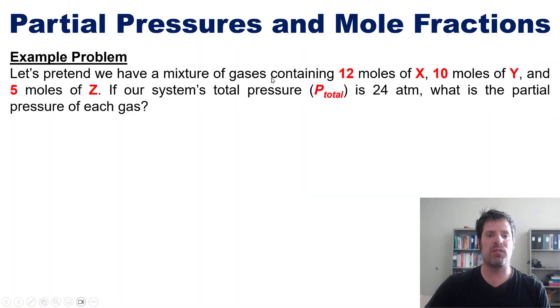Let's pretend that we have a mixture of gases containing 12 moles of X, 10 moles of Y, and 5 moles of Z. Let's also pretend that our system's total pressure is 24 atmospheres. Now if that's the case, then what is the individual pressure of each gas?